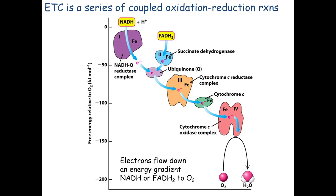If you stop supplying oxygen, the whole chain backs up. You can't make enough ATP, the mitochondria will die, the cells hosting them will die, and ultimately the organism will die.